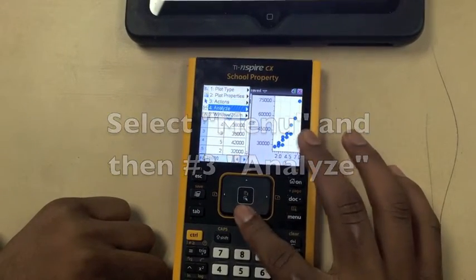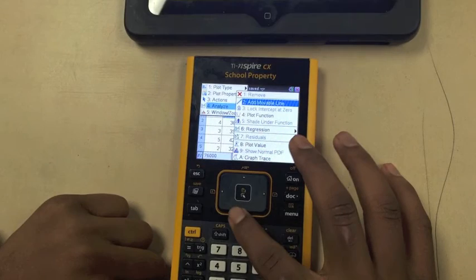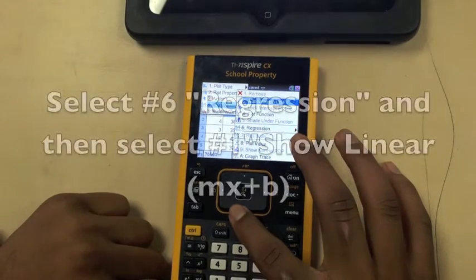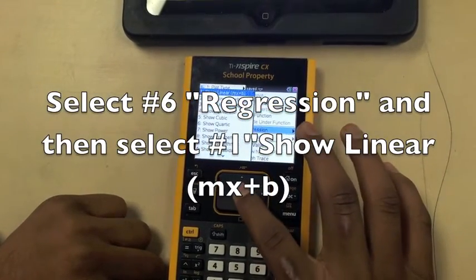From there I select menu and analyze, then I select regression and mx plus b.